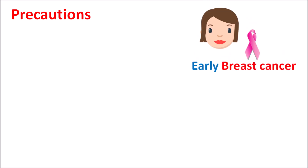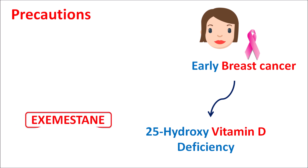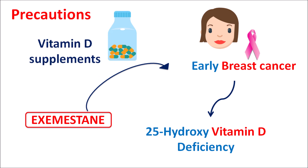In the early stage of breast cancer, women may have some vitamin deficiency — particularly 25-hydroxy vitamin D deficiency. In such patients, exemestane should be carefully given. Before treatment, vitamin D levels should be checked, and during treatment vitamin D supplementation can be given. This supplementation is especially important because exemestane reduces bone mineral density, and if a woman already has low vitamin D levels, it further increases the risk of bone fractures and osteoporosis.